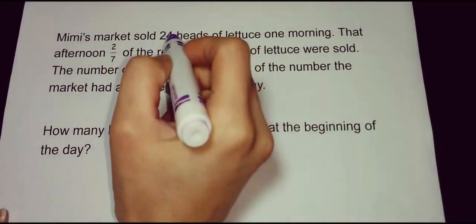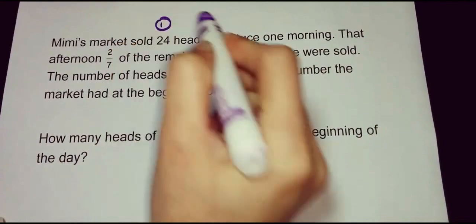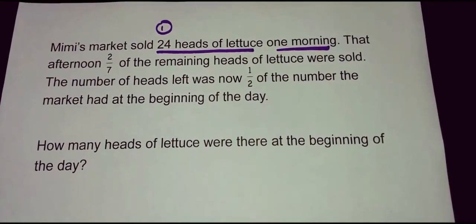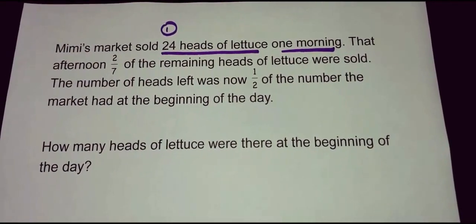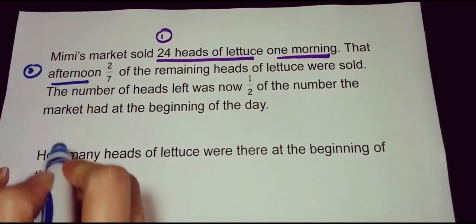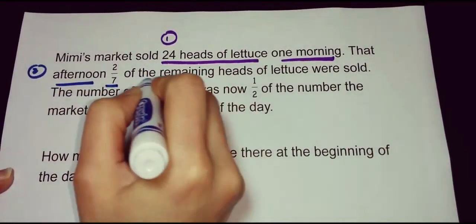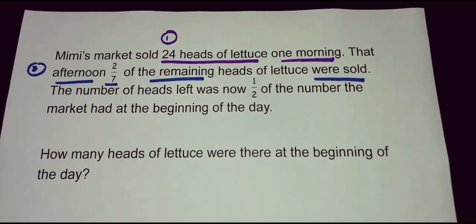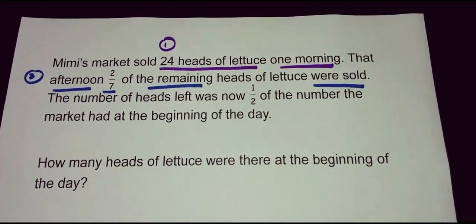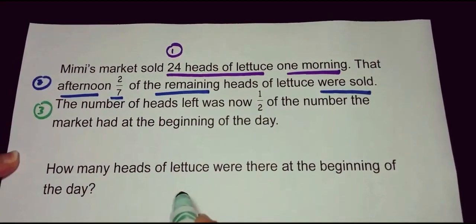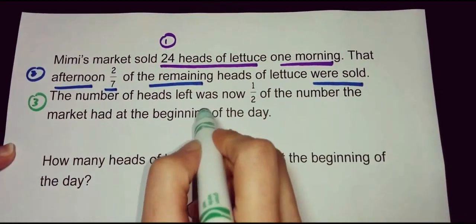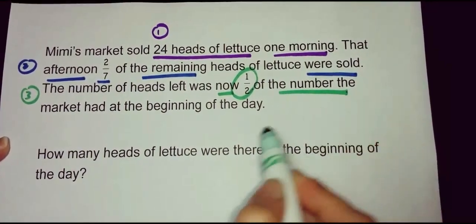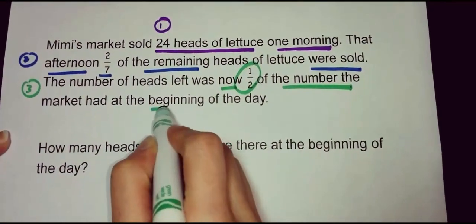Let's look at a number of clues that we have. Number one: twenty-four in the morning. Number two: in the afternoon, two-sevenths of the remaining was sold. And the last one: the number of heads left now is one-half the number the market had at the beginning of the day.